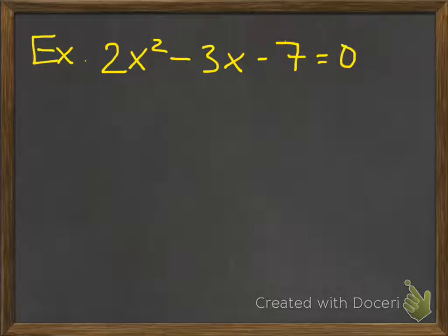My example is 2x squared minus 3x minus 7 is equal to 0. Now again, notice here that this is equal to 0. It always needs to be equal to 0. If it's not equal to 0, make it equal to 0. And we did that on the factoring worksheet with the last few problems.